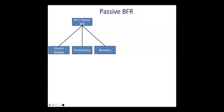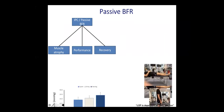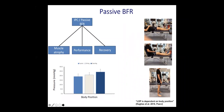The final method I will discuss is that of passive blood flow restriction. The schematic on screen shows three different ways it can be useful: muscle atrophy, enhancing acute performance, and recovery. One important note is to apply pressure using a device that can measure limb occlusive pressure, as body position changes limb occlusive pressure. This measurement should be used rather than arbitrary pressures, because much of the passive blood flow restriction and ischemic preconditioning research uses arbitrary pressures rather than those based on limb occlusive pressure. I'm going to focus mainly on the performance and recovery aspects.